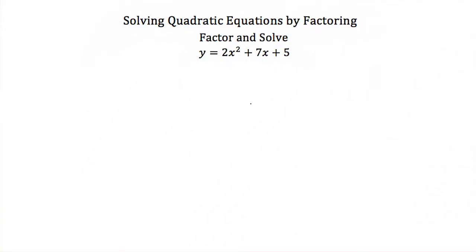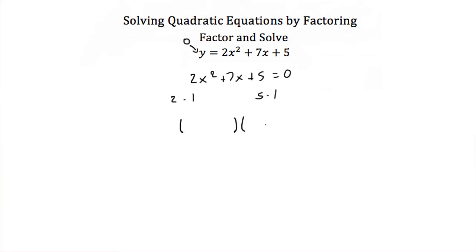So lastly, let's factor and solve this equation y is equal to 2x squared plus 7x plus 5. Now when we solve the quadratic, we set y equal to zero. So this is 2x squared plus 7x plus 5 is equal to zero. Now I have to factor this. My factors of my leading coefficient are 2 and 1, and the factors of my constant term are just 5 and 1. So this is going to factor into a 2x and an x, and then to get 7 in the middle, this will be 2x plus 5 and x plus 1.